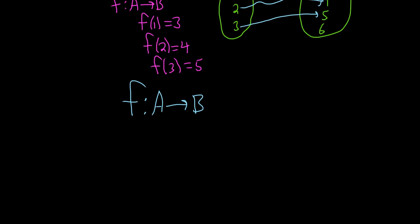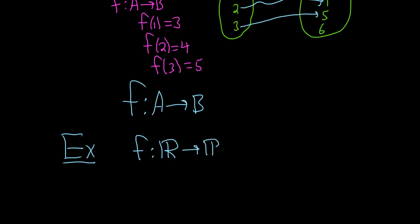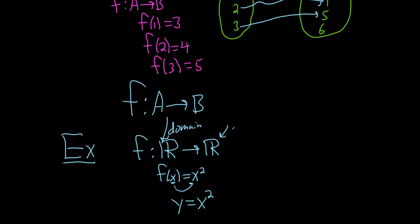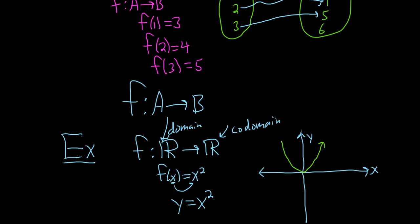Let's do another example, one that's a little more familiar. Let's define f from the set of real numbers ℝ into the set of real numbers ℝ by f(x) = x². So this is a function — it takes a number x and assigns it a y value of x squared. We can also write y = x². The x values are the inputs; they're in the domain. The y values are the outputs; they're in the codomain. If you graph this function, you would graph all of the x, y pairs and you would get a parabola.